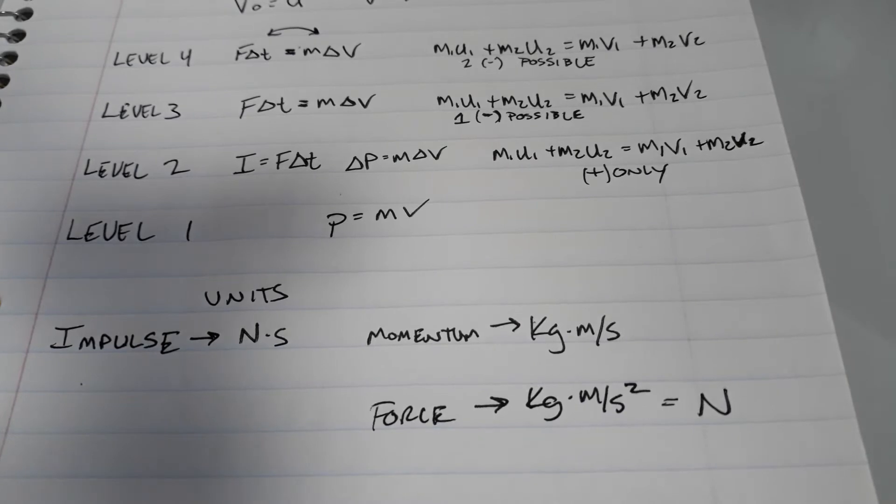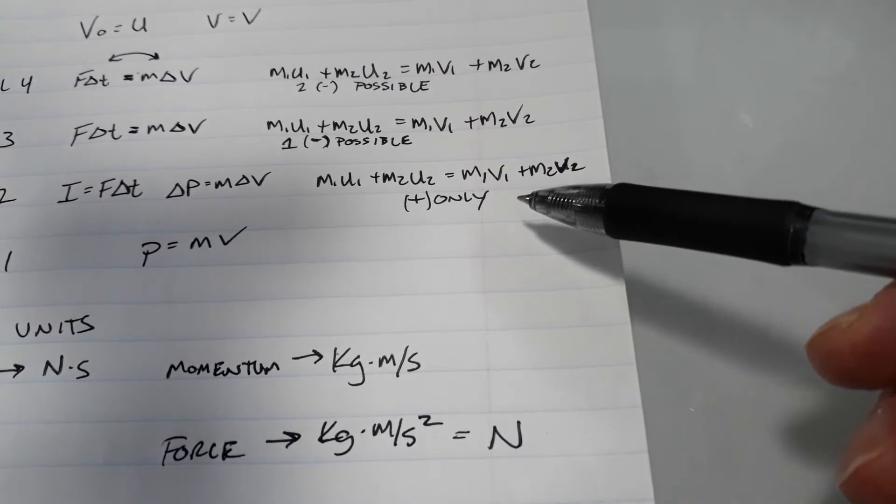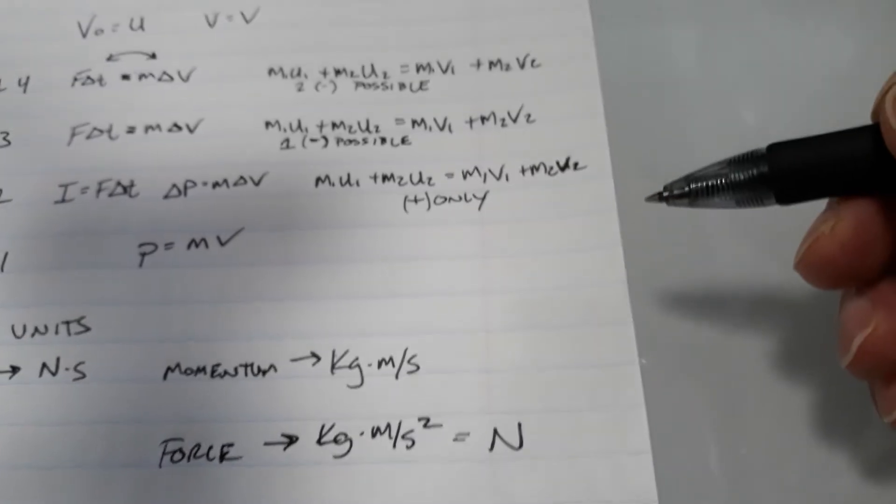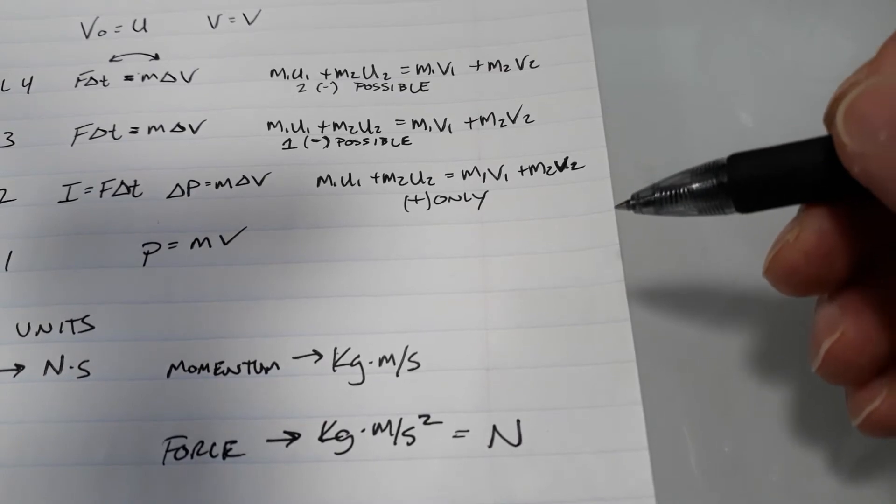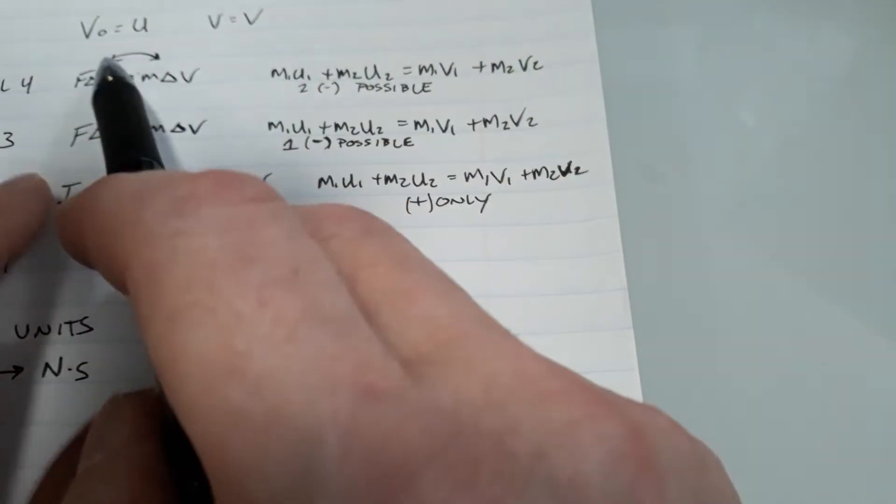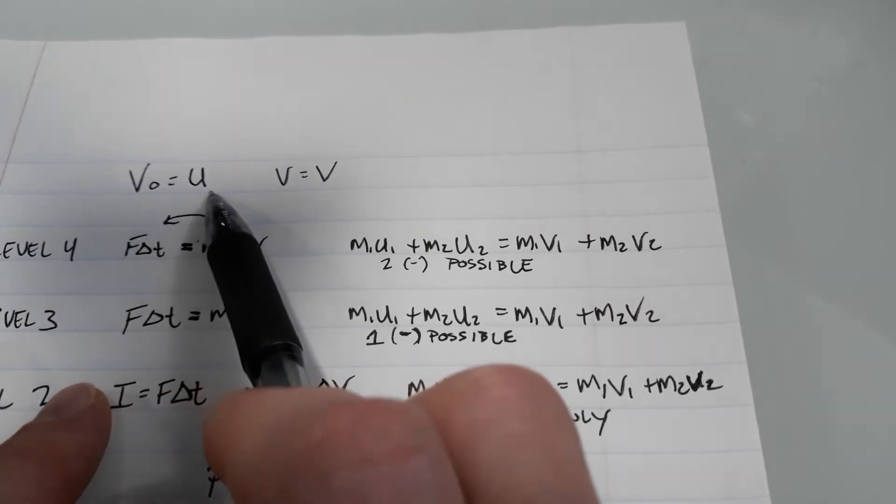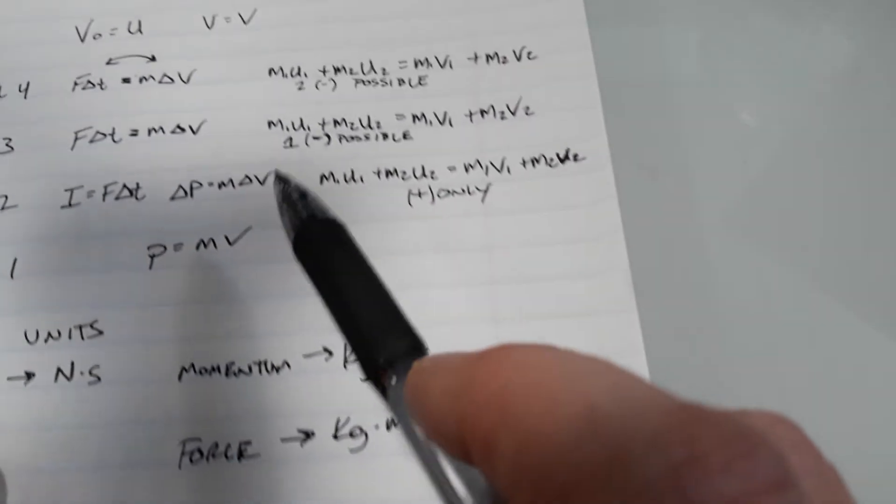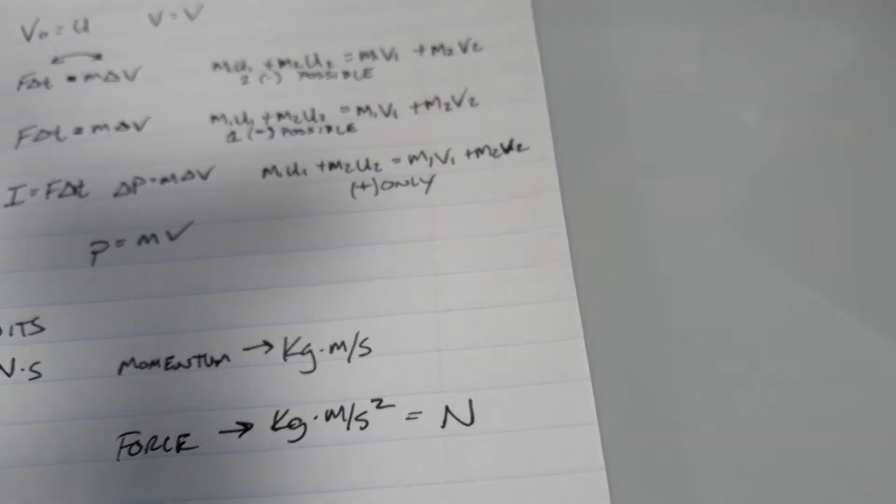Second thing you're going to see is the conservation of momentum. One thing that I did, I really thought about it a lot. I really put effort into thinking, is this the right thing to do for students? Will it be helpful to them? And I changed from using the notation we used before, which was that the initial velocity was V-naught to the letter U. This is kind of a European thing, but I really like it.